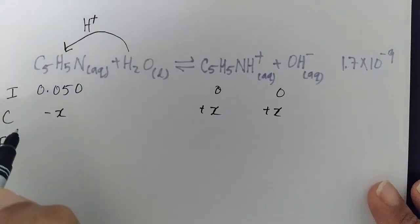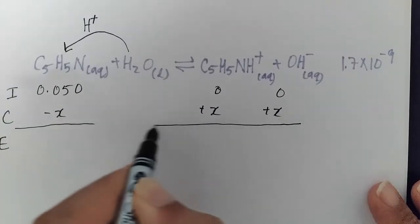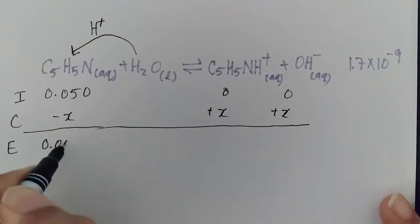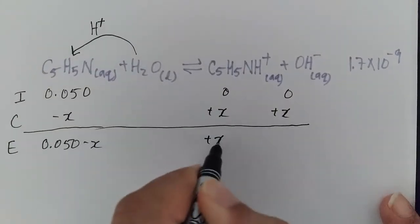And then finally, at equilibrium, when it's all said and done and when this reaction is completely finished, we will have 0.050 minus X. We will have plus X, and we have plus X.